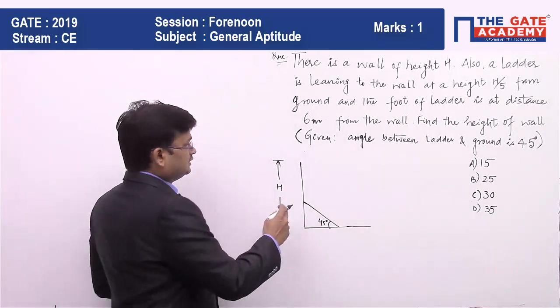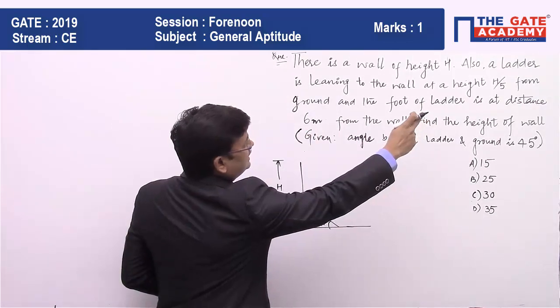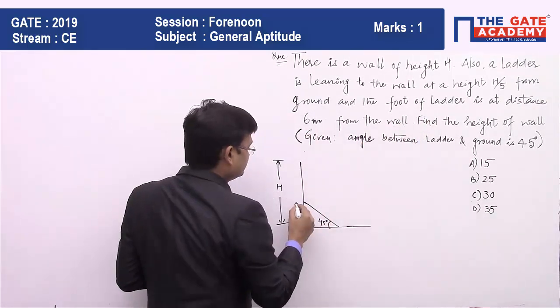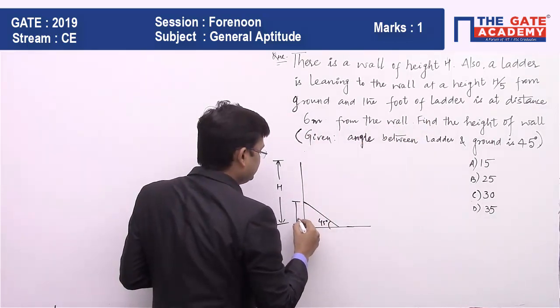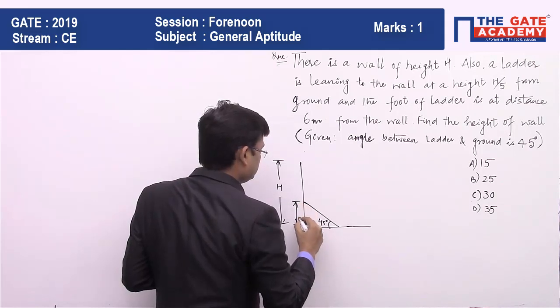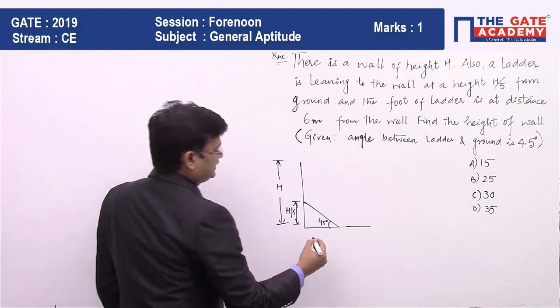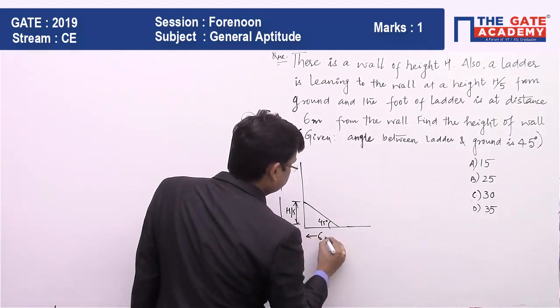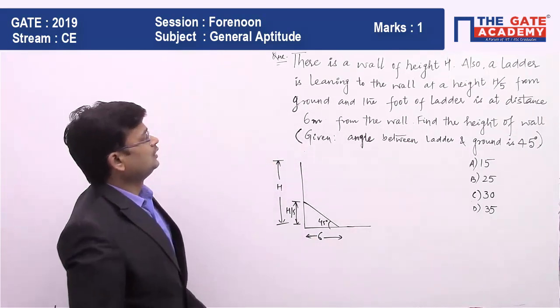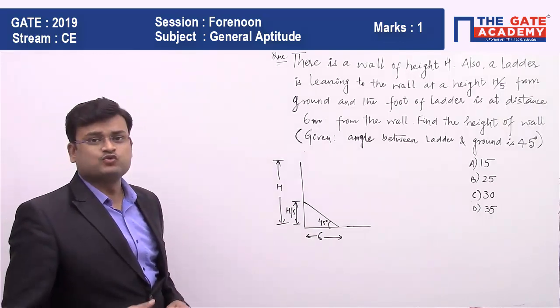And also it is given the height h by 5 from ground, that means this particular height is h by 5, and the distance, this particular distance is given 6 meters. Now the question is, what is the value of h? What is the height of the wall?